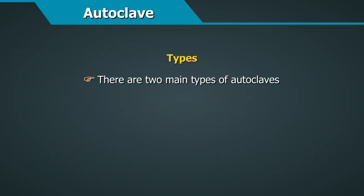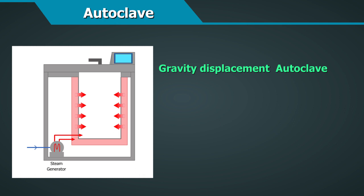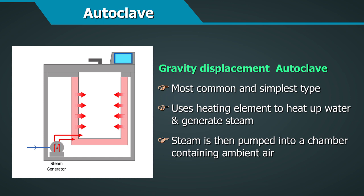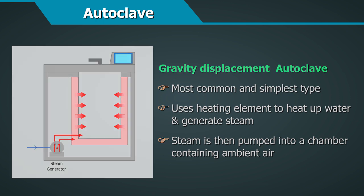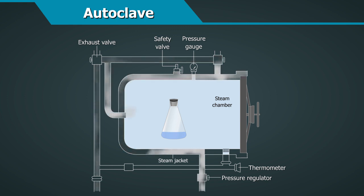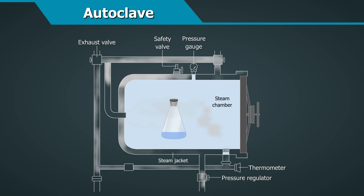There are two main types of autoclaves. The gravity displacement autoclave is the most common and simplest type. It uses a heating element to heat up the water and generate steam. The steam is pumped into a chamber containing ambient air, and due to its lower density, it rises to the top and gradually displaces all ambient air, which is forced out through a vent below. Steam continues to be pumped at higher pressure, reaching a temperature of about 121 to 140 degrees centigrade. After the cycle, steam is discharged through the exhaust valve.